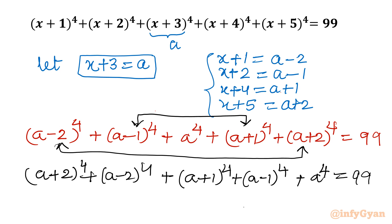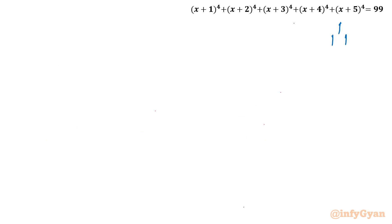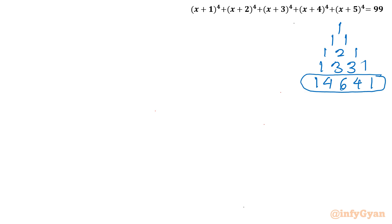Now I will simplify these two combinations separately using Pascal triangle and binomial expansion. Let us draw Pascal triangle first: 1; 1 1; 1 2 1; 1 3 3 1 for power 3. And for power 4: 1 4 6 4 1. These are the coefficients for the expansion.